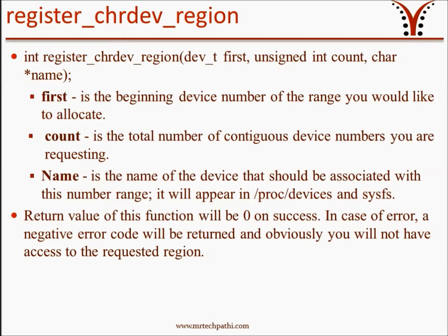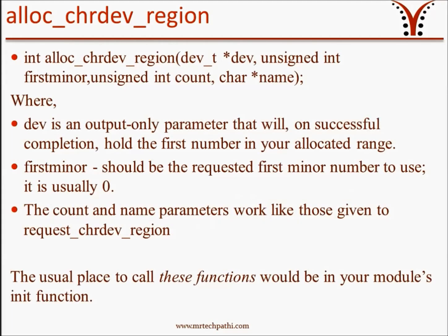Since we have requested a memory region using this function call, if there is a negative error, you will not have access to the requested region. The second function for allocating device numbers is alloc_chrdev_region. This function allocates a major number dynamically — calling it with appropriate parameters will allow the kernel to allocate a major number for you on the fly.